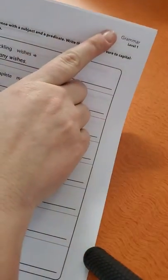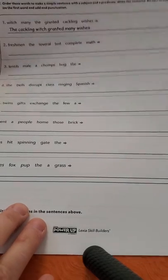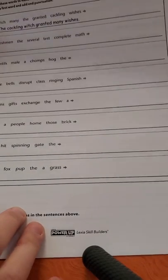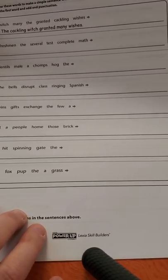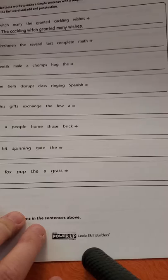All right, scholars, this is grammar level one. You are on page eight. So let's go ahead and check out what we are working on today. It says, order these words to make a simple sentence with a subject and a predicate. Write this sentence. Be sure to capitalize the first word and add end punctuation.